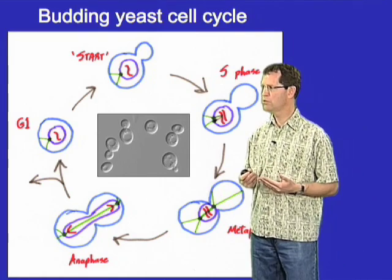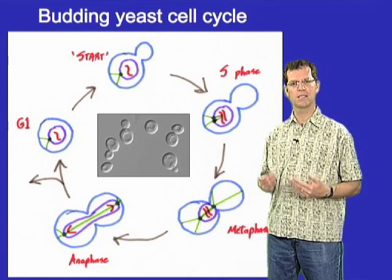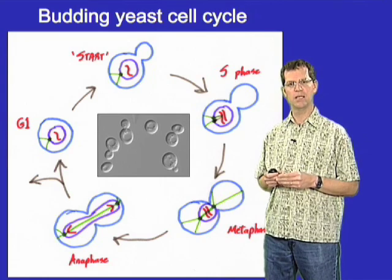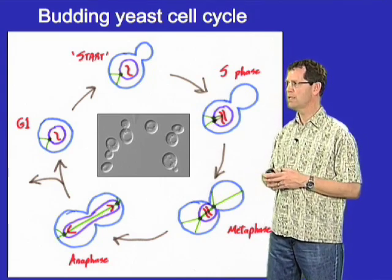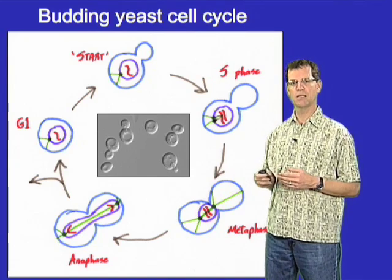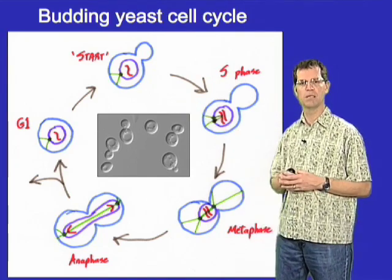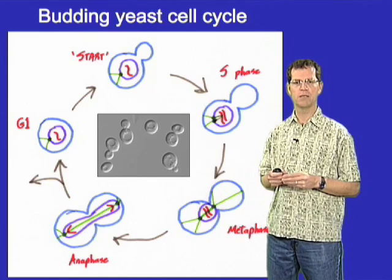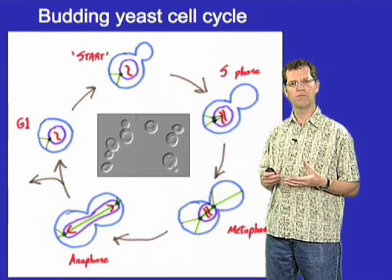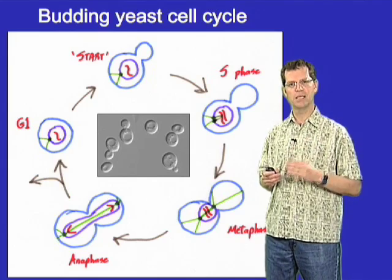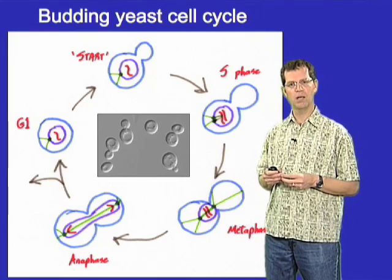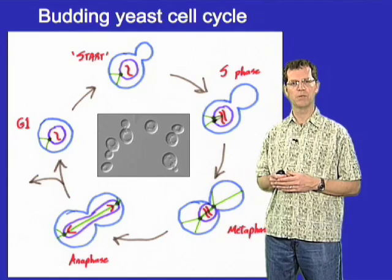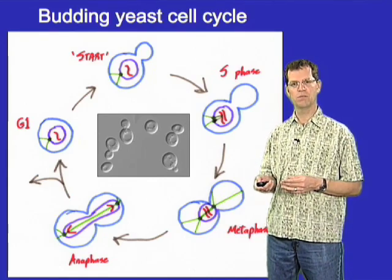The size of a bud in budding yeast gives a very good indication of the position of that cell in the cell cycle. This turned out to be a useful tool because it allowed the isolation of mutants arrested at specific cell cycle stages. Lee Hartwell and his colleagues back in the late 1960s and early 1970s isolated a wide range of mutants in various genes that resulted in cell cycle arrests at specific stages determined on the basis of bud morphology. These were conditional temperature-sensitive mutants — at normal room temperature these mutant genes were functional, but at 37 degrees the gene products became inactivated, causing cell arrest.